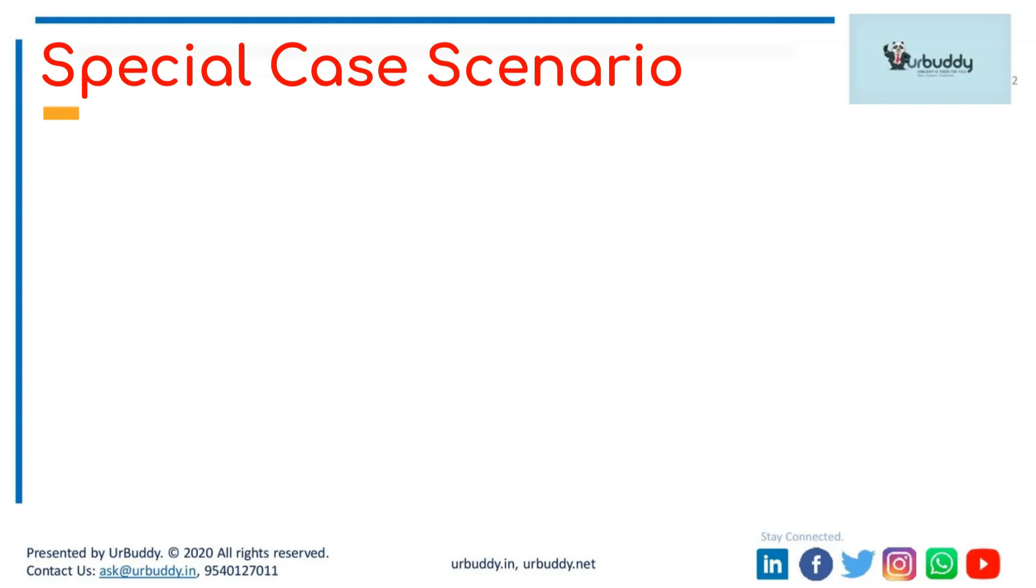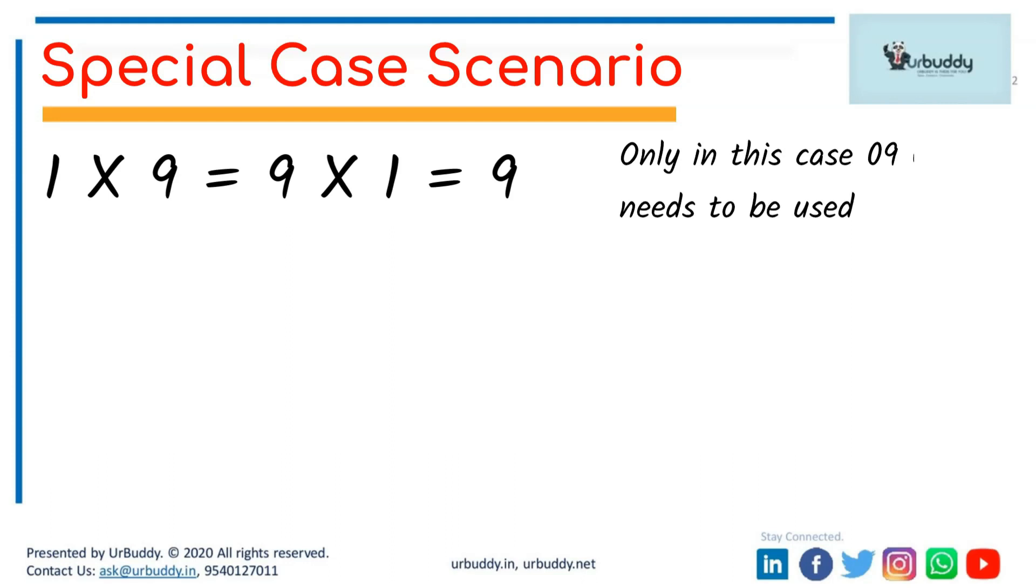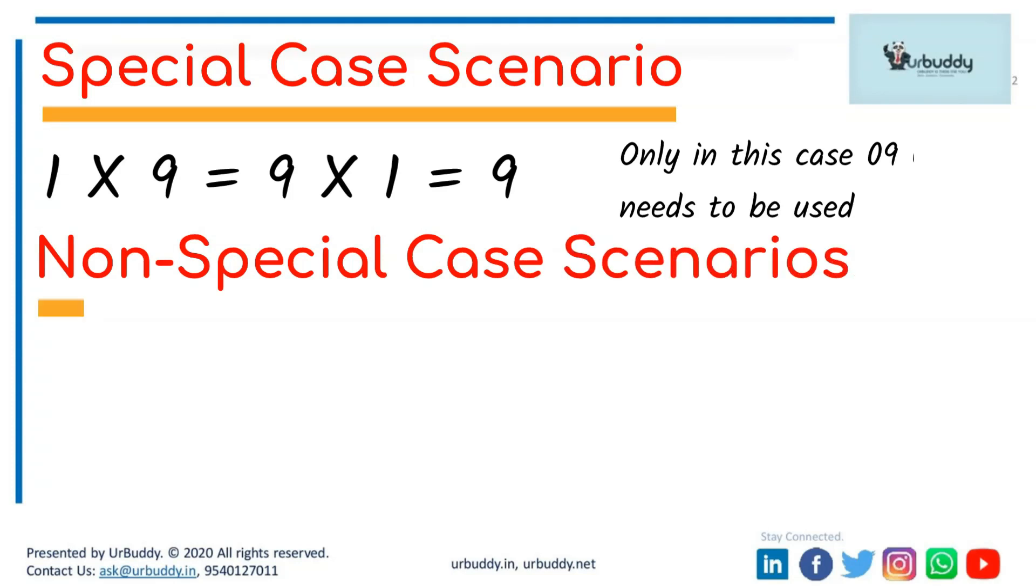So there is only one special case scenario: 1 multiplied by 9 or 9 multiplied by 1 equals 9. Only in this case you need to use 09, because in each and every other case where the last two digits can add up to 10, you will get a double-digit number automatically. 2 into 8 or 8 into 2 is 16, 3 into 7 or 7 into 3 is 21, 4 into 6 or 6 into 4 is 24.